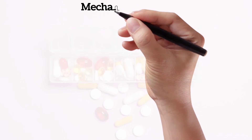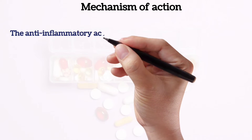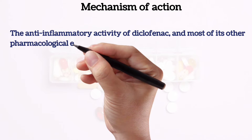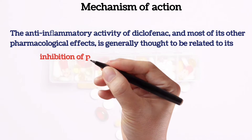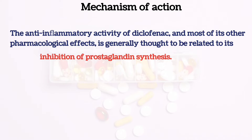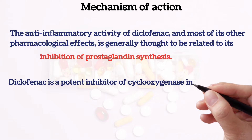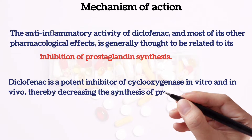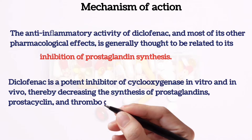Mechanism of action: The anti-inflammatory activity of diclofenac and most of its other pharmacological effects is generally thought to be related to its inhibition of prostaglandin synthesis. Diclofenac is a potent inhibitor of cyclooxygenase in vitro and in vivo, thereby decreasing the synthesis of prostaglandins, prostacyclin, and thromboxane products.